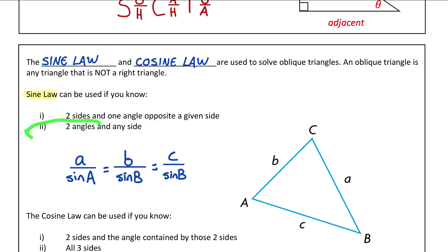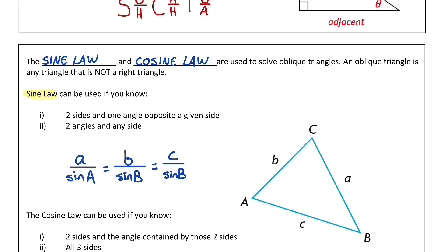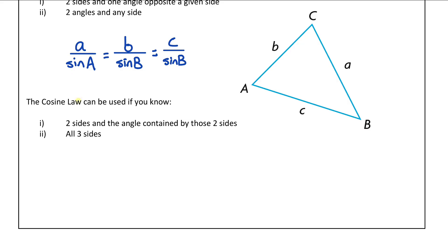The other condition for sine law is if you know two angles and any side. For example, if we knew angle A, angle C, and side A, we could use sine law to solve for side C. And then the other law, cosine law, has two formats.